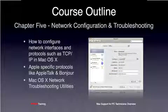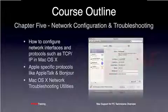Chapter 5 is the first of three networking chapters. This chapter introduces students to basic networking theory, kept fairly brief as it is assumed they already have some networking experience. We then look at how to configure network interfaces and protocols on Mac OS X.